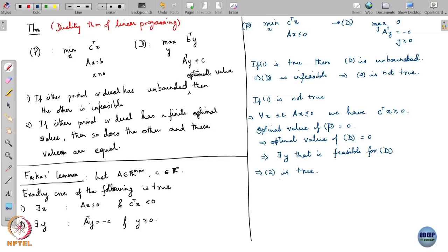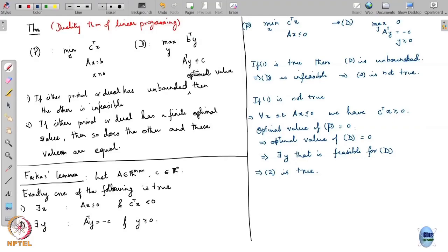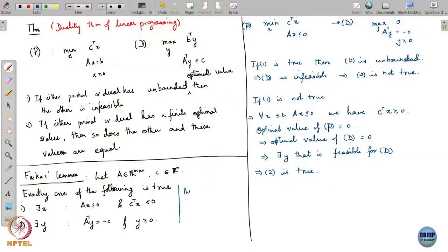So this covers all cases: if statement 1 is true, statement 2 cannot be true; if statement 1 is not true, statement 2 must be true. It is impossible for both to be false, and impossible for both to be true. This kind of result is called a theorem of alternatives — it says that out of a given set of alternatives, exactly one can work. It became popular due to Farkas himself because of this peculiar-looking result. This is just one form; as you explore LP duality, you can derive your own versions of Farkas Lemma.